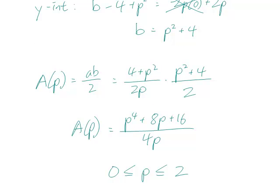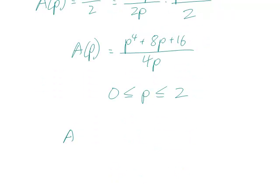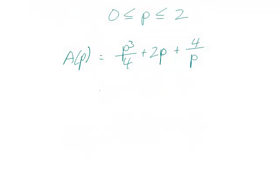So let's take the derivative, and before we take the derivative, it may be easier to write this as p cubed over 4 plus 2p plus 4 over p. So we don't have to use the quotient rule. This is 3p squared over 4 plus 2 plus, 4 over p is 4 times p to the minus 1, so the derivative is minus 4p to the negative 2, or minus 4 over p squared.